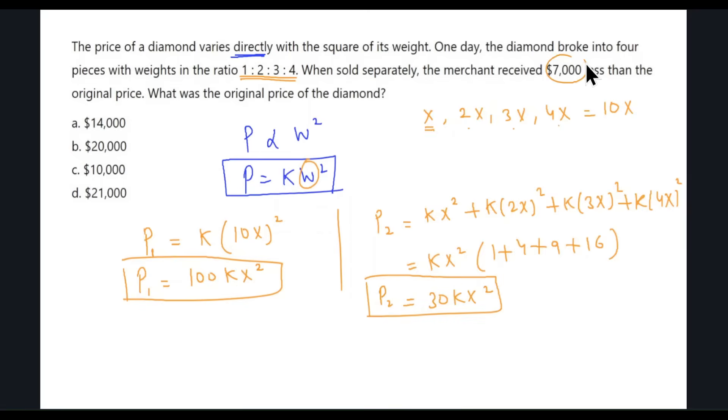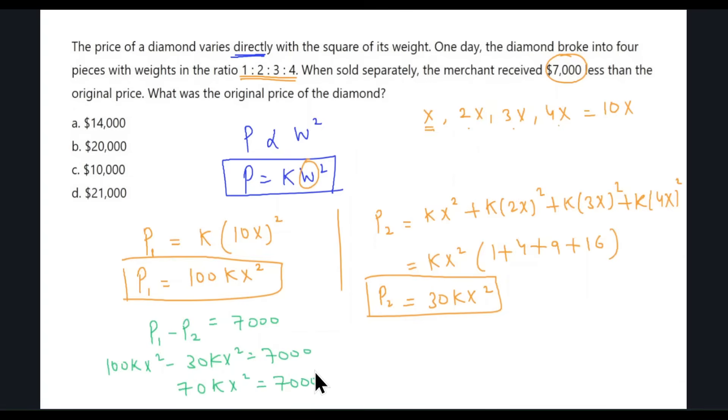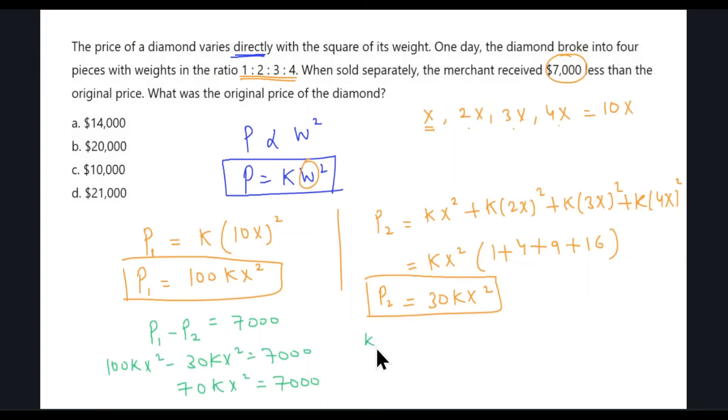So this is 30KX squared, the value of P2. They are saying that he received $7,000 less than the original price. This means that 100KX squared minus 30KX squared equals $7,000, which means that 70KX squared equals $7,000. This means that KX squared is 100.